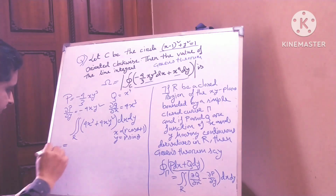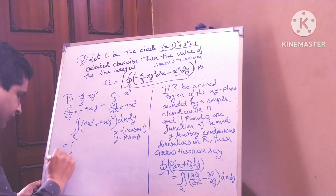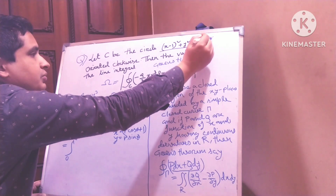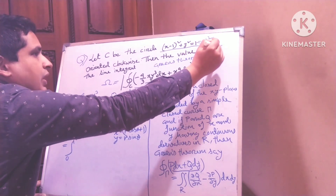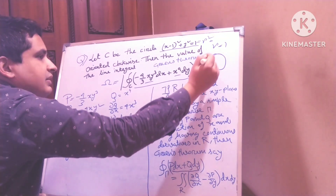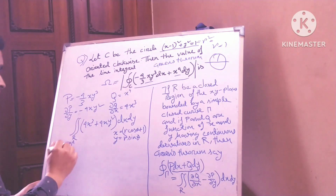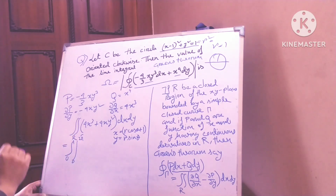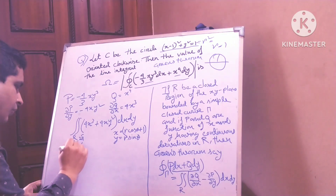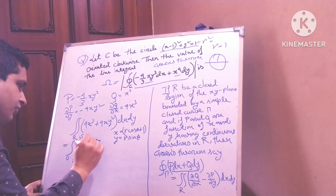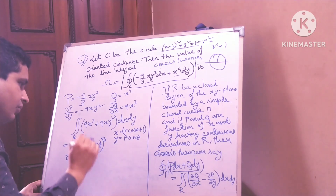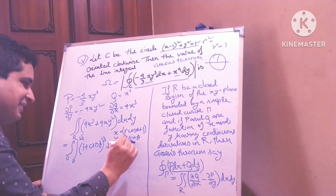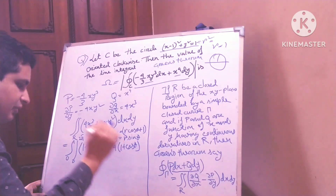I am just putting the result. The radius goes from 0 to 1, since r equals 1 is the circle radius. And theta goes from 0 to 2 pi. The integrand involves 1 plus r cos theta whole cubed, plus 4x times 1 plus r cos theta.